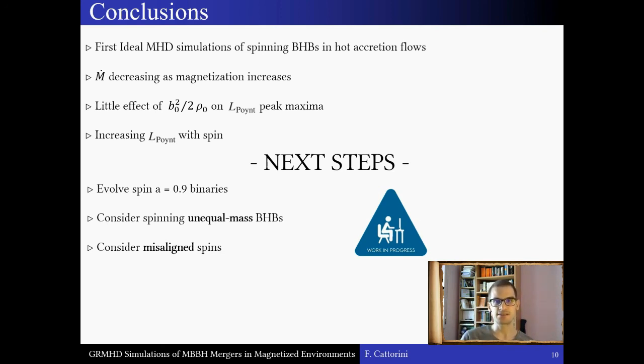On the other hand, magnetization has little to no effect on the local maxima of the Poynting luminosity, which, in contrast, is affected by the individual black hole spins.